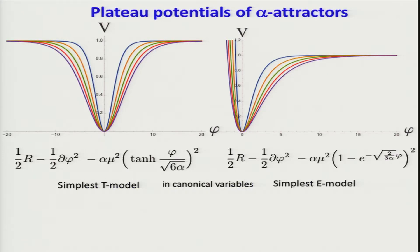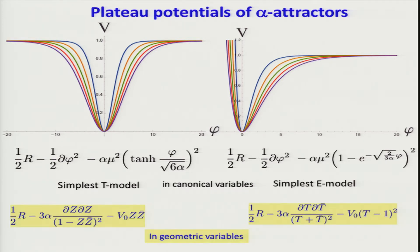If you have a unit size Poincaré disk, it corresponds to alpha equals one-third. Higgs and Starobinsky are alpha equals one. This is 10 to the minus 3, the lowest target for B-modes. Recent cosmological observations seem to indicate plateau potentials work well. If we go from this hyperbolic geometry, you see DZ DZ bar divided by 1 minus ZZ bar squared - this is the hyperbolic Poincaré disk. Then you choose some simple potential.